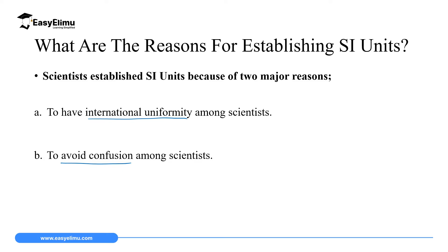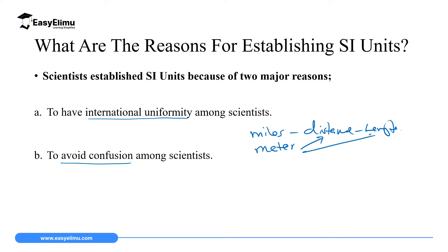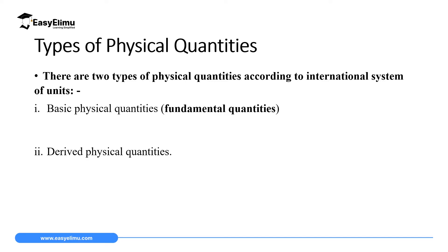For example, in the United States they used miles to measure distance or length, while other people in the world used meters to measure the same distance. So if you are in the USA you talk about miles, but if you come to Kenya and someone talks about meters, you cannot integrate what they are talking about. To avoid this confusion and bring about uniformity, scientists decided to come up with SI units — the standard units of measurement in science.